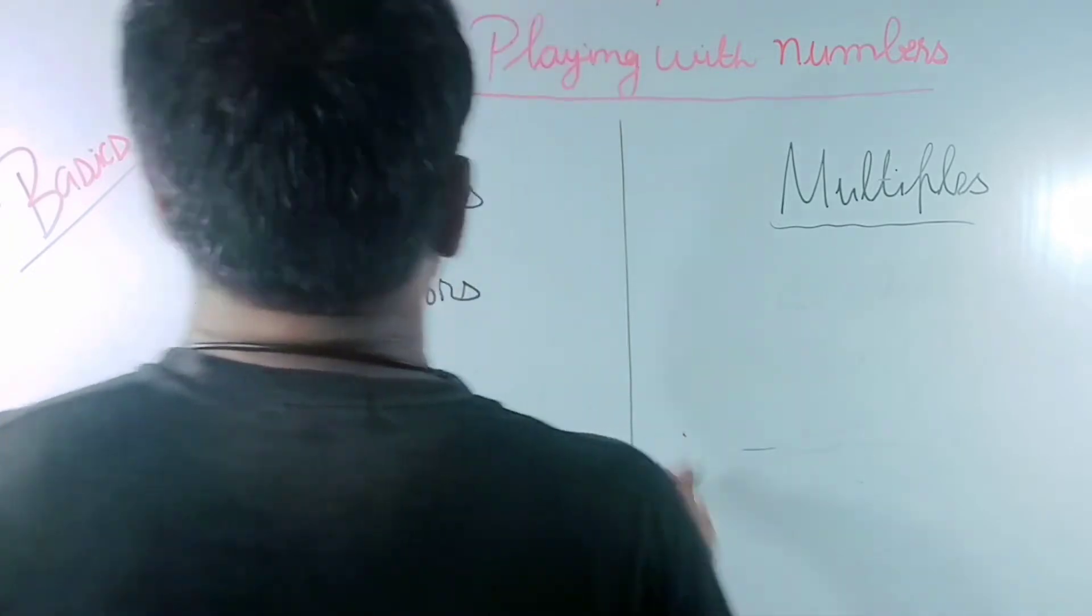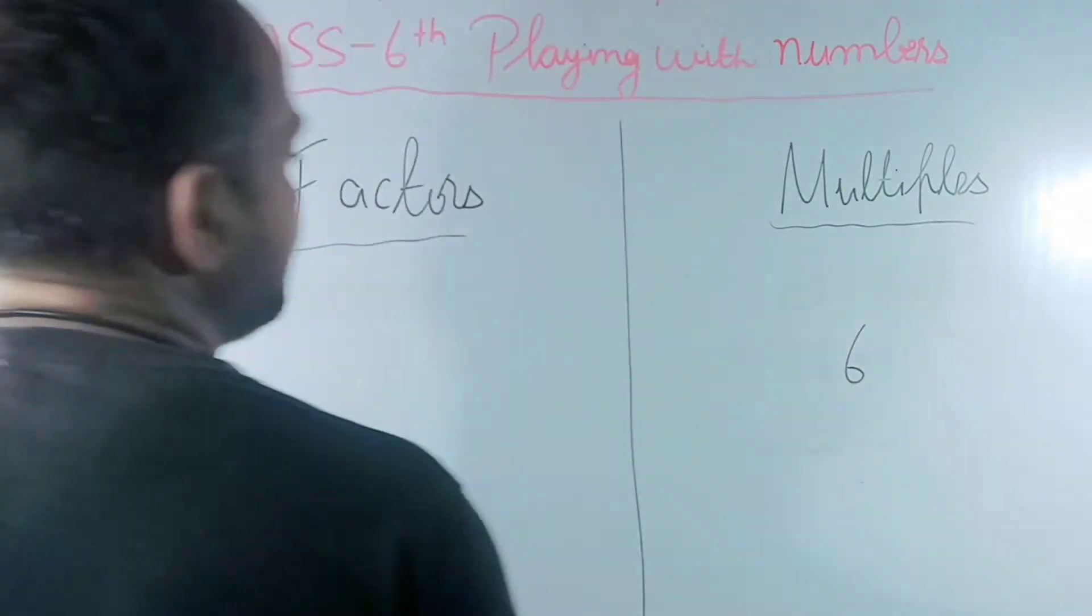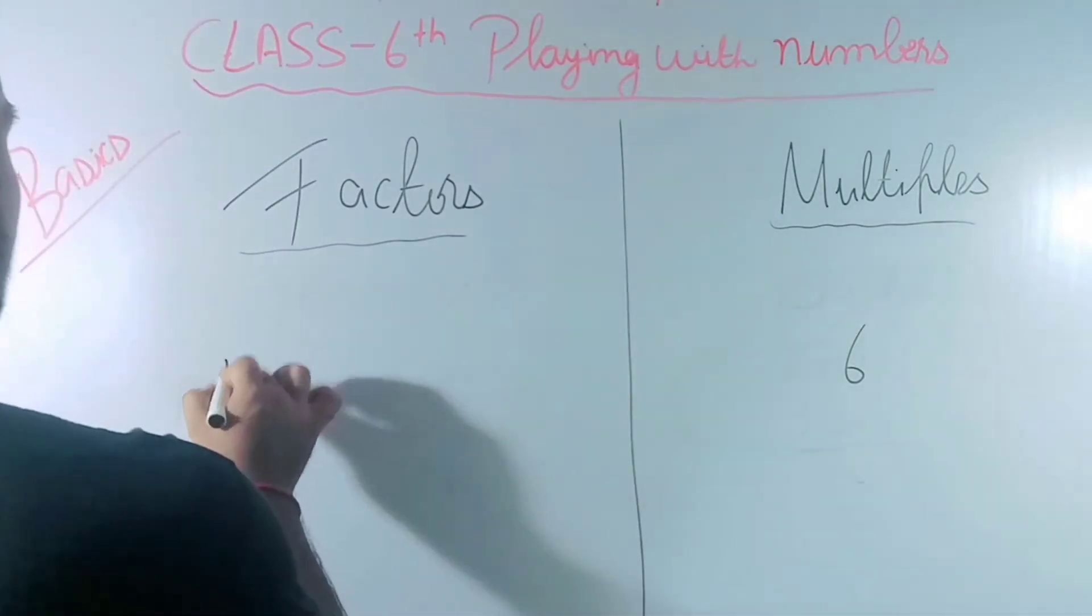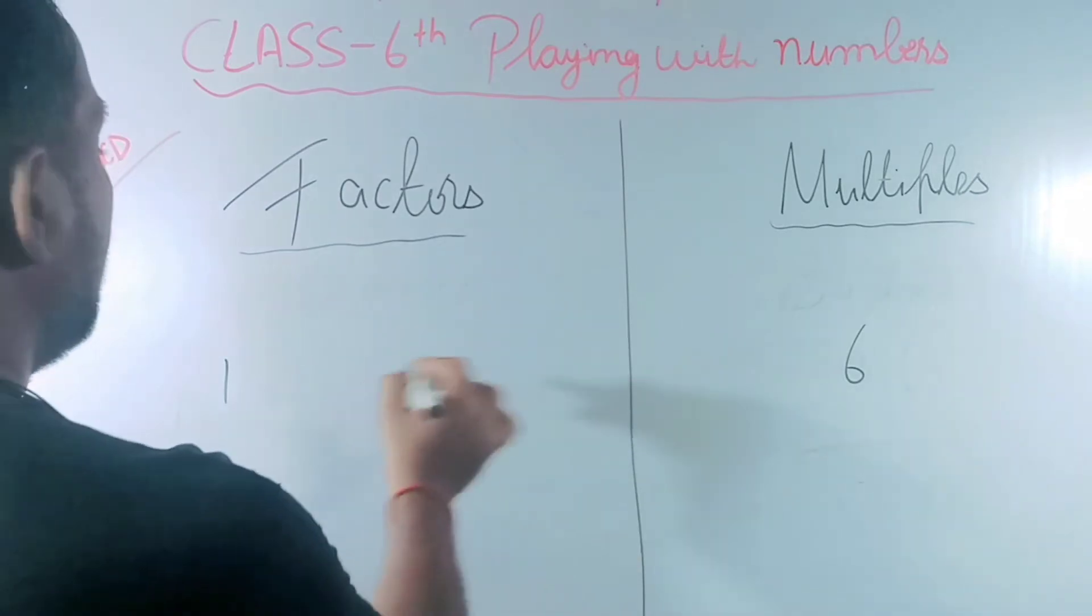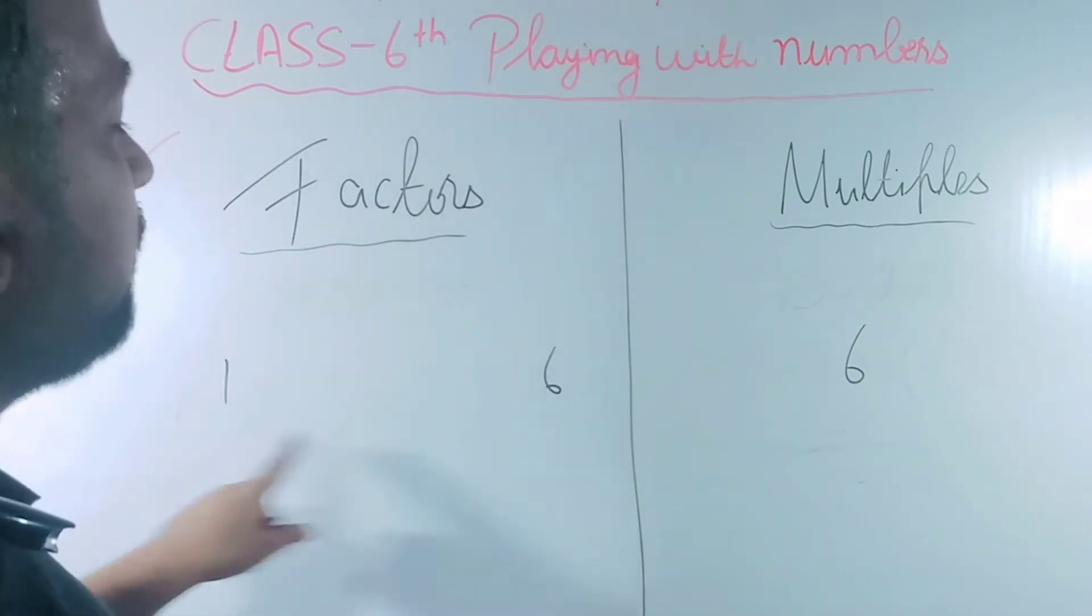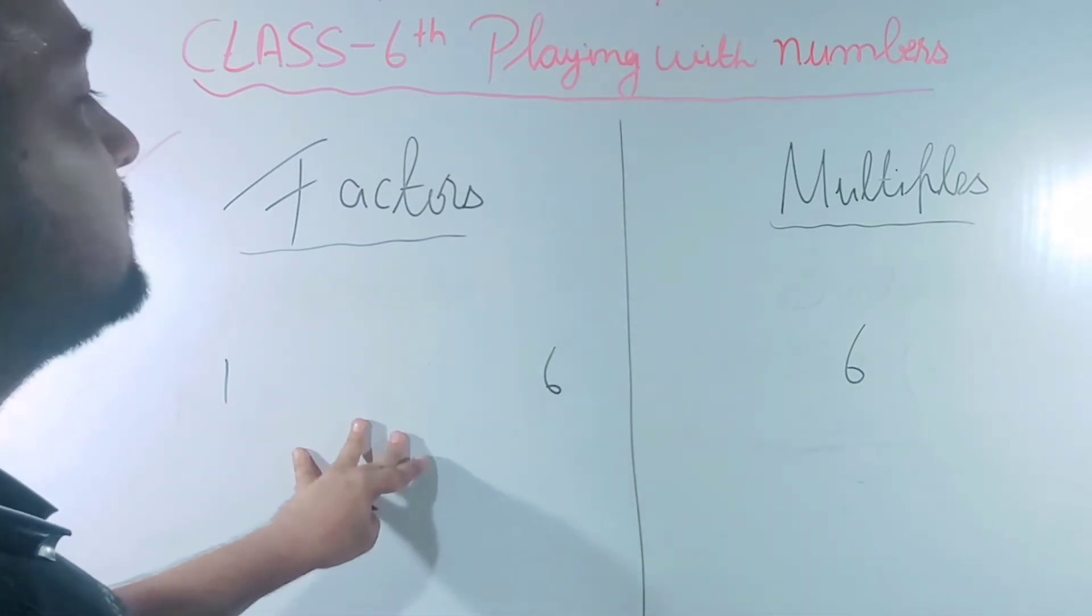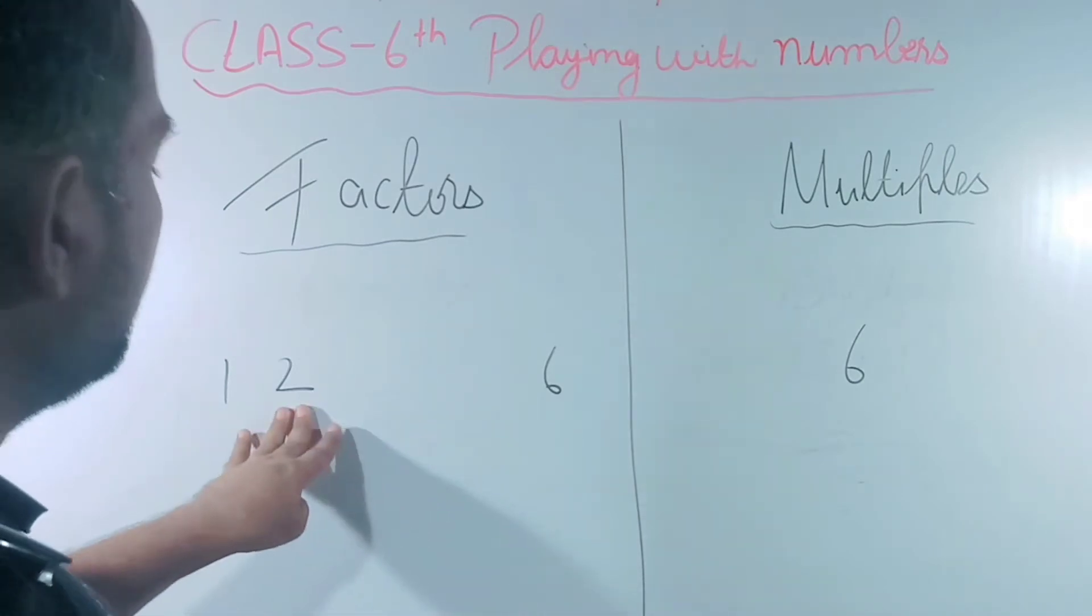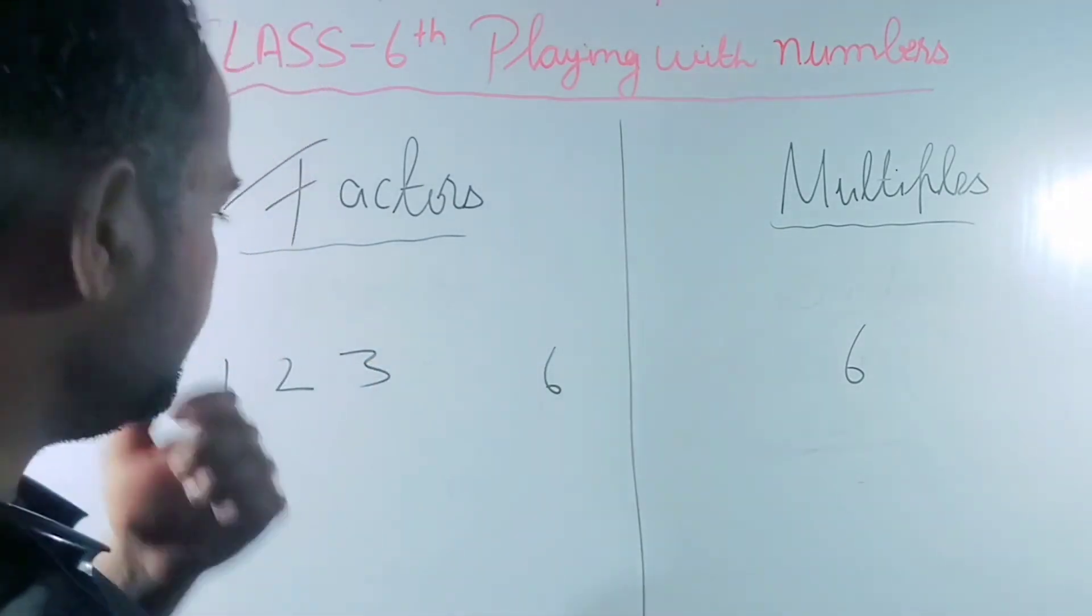Let's take one example. I am taking 6. We have to find the factors of 6. So one is common in all because one is a common factor of all numbers, and number itself is also a factor. Now we have fixed starting and ending point. Now we have to find the factors between these two numbers. So 2 is a factor of 6. If you divide, then there is no remainder. 3 is also a factor.